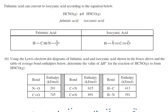Okay, for the next part, it says a fulminic acid can convert to isocyanic acid according to this equation. Using the Lewis electron dot diagrams for fulminic acid and isocyanic acid shown in the boxes above and the table of average bond enthalpies below, determine the value of delta H for the reaction of HCNO to form this. So we want to find delta H for this reaction.